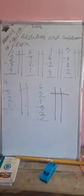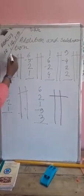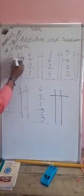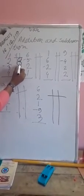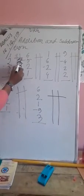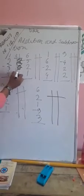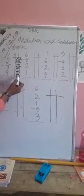QKG addition and subtraction. 1, 2, less 3 and add 4. So answer is 1, 2, 3, 4.